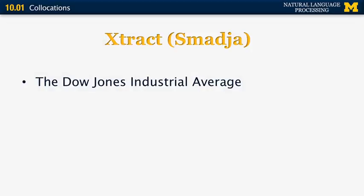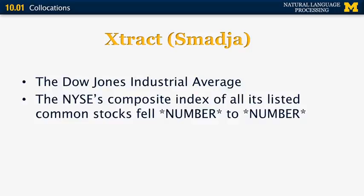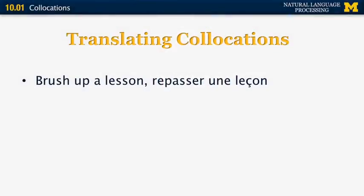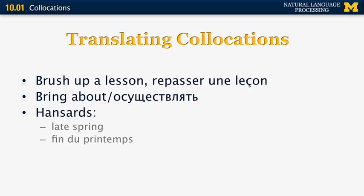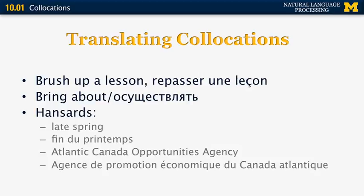EXTRACT was a system developed by Frank Smadja that was able to extract collocations like the Dow Jones Industrial Average, or flexible collocations like the NYSE composite index of all its listed common stocks fell, then some number to some other number. Translating collocations is not trivial — you don't want to translate them one word at a time. For example, brush up a lesson in French is translated as repasser une leçon, meaning to go over. Bring about, a phrasal verb in English, is translated as a single word in Russian. From the Hansard corpus, late spring is translated as fin du printemps (end of spring), and Atlantic Canada Opportunities Agency becomes Agence de Promotion économique du Canada Atlantique.